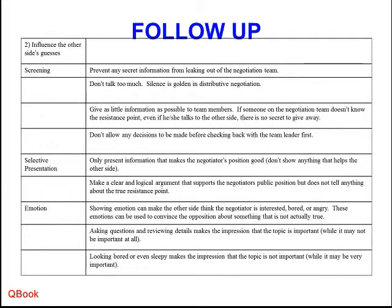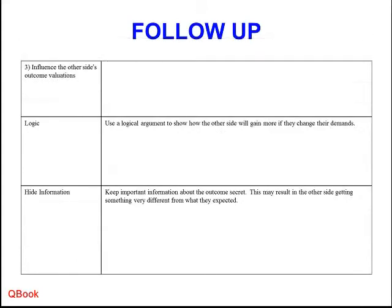Screening, selective presentation, and emotion — all of these are ways to observe or influence the other side to make them think something you want them to think, or to react in a way that gives you information. You can also use logic and hide information from the other side. Keep your secret information secret — things like your inventory, sales numbers, cost, capital cost, and manufacturing capacity.